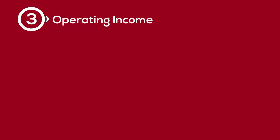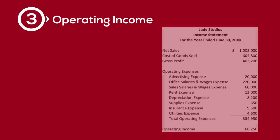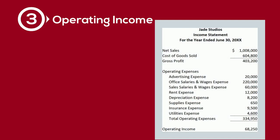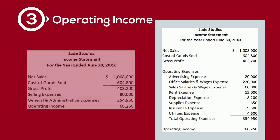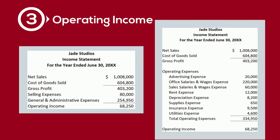Gross profit is one type of profit displayed on the multi-step income statement. The next is operating income. Gross profit shows how much we made on the sale of our inventory; however, the cost of our inventory is not the only cost of our business. There are several other costs necessary to run a business. The next section lists all the other costs necessary to run and operate a business that are considered part of normal operations. These expenses are categorized as selling expenses, general expenses, and administrative expenses. The expenses can be listed individually or grouped by category, and we deduct these from gross profit to calculate operating income.